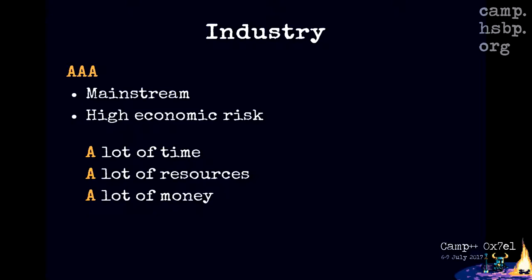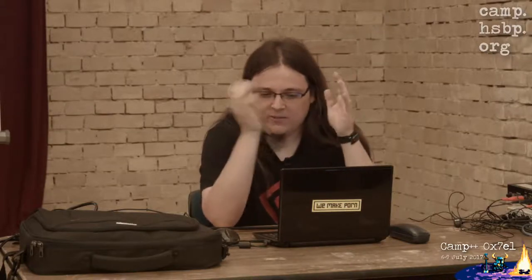AAA games have the highest development budgets and levels of promotion, which means there is a high economic risk involved. Publishers will only pour money into projects that will make the money back and more. The video games industry is now even bigger than Hollywood itself. AAA is not really a specific acronym — it usually stands for a lot of time, resources, and money. Credits of a AAA game usually consist of hundreds of names, because they can afford celebrity voice actors. The Voice Actors Guild actually started a strike recently.